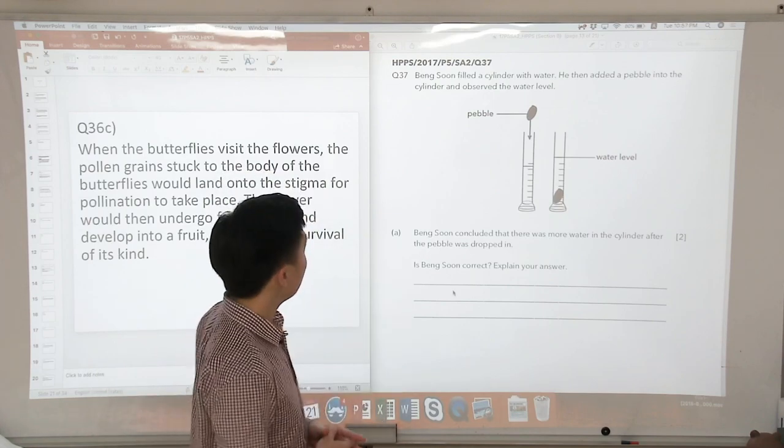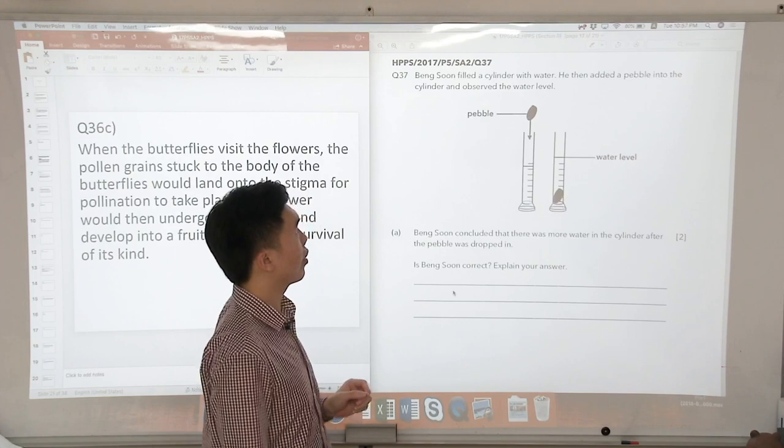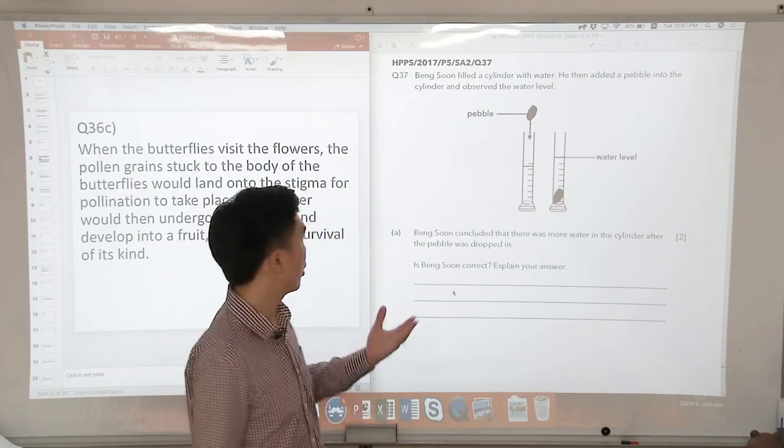Let us look at question 37. Bing Sun filled a cylinder with water. He then added a pebble into the cylinder and observed the water level.